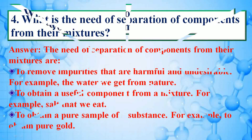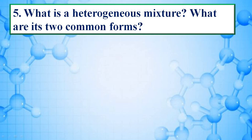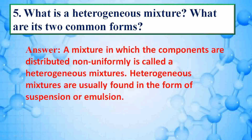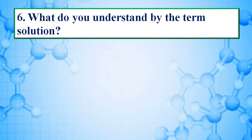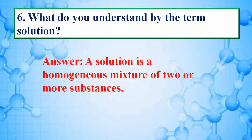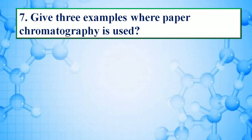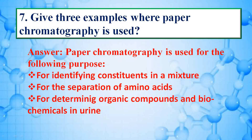What is a heterogeneous mixture and what are its two common forms — answer is a mixture in which components are distributed non-uniformly is called a heterogeneous mixture; heterogeneous mixtures are usually found in the form of suspension or emulsion. What do you understand by solid solution — a solution is a homogeneous mixture of two or more substances. Give three examples where paper chromatography is used — paper chromatography is used for identifying constituents in a mixture, for the separation of amino acids, and for determining organic compounds and biochemicals in urine.